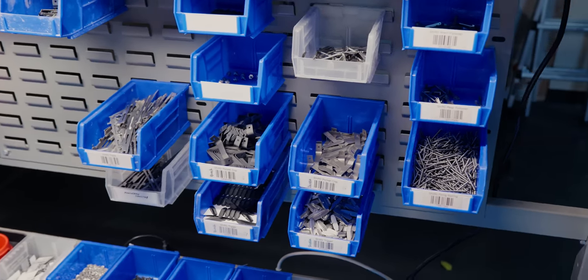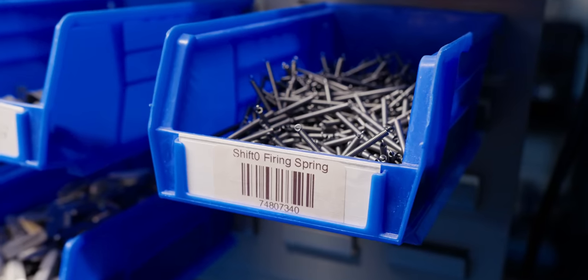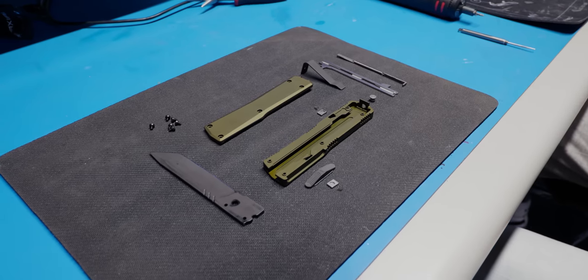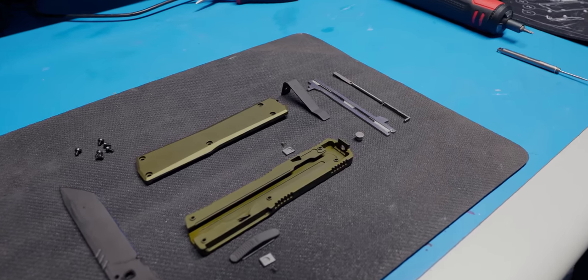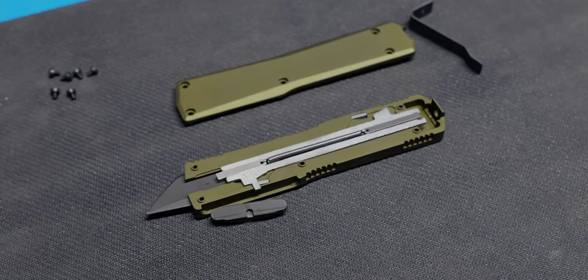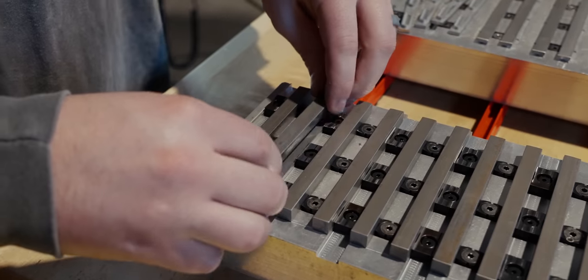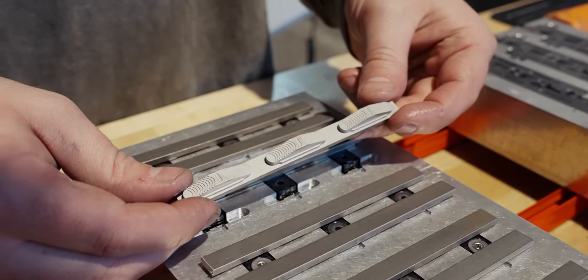With all the blades and handles finished, there is still the big consideration of all the internals and small parts that make up an OTF. OTF knives are truly some of the most complicated production knives out there, due in large part not only to their tolerances, but also to the mechanisms that make them work.